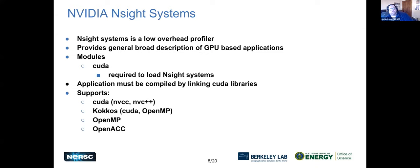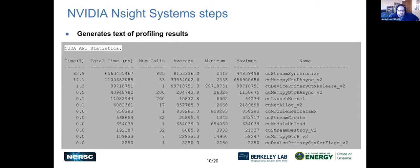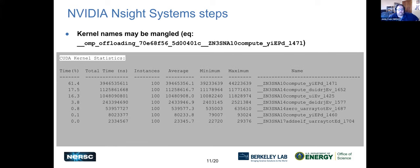NVIDIA Nsight Systems is a low-overhead profiler provided by NVIDIA, mainly for CUDA but also supporting OpenMP and OpenACC. You need to run srun to get the profile. Output includes basic statistics on time, calls, and averages within each function, plus statistics for mangled names — Cray tools do unmangling by default but you can also unmangle with the compiler. You also get memory operations by time and by size.